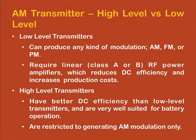As a comparison: low level transmitters can produce any kind of modulation — AM, FM, or PM — but require linear class A or B RF amplifiers, which reduce DC efficiency and increase production cost, making them suitable only for short range communications. High level transmitters have better DC efficiency than low level transmitters, are well suited for battery operations, but can only be used for generating amplitude modulation.